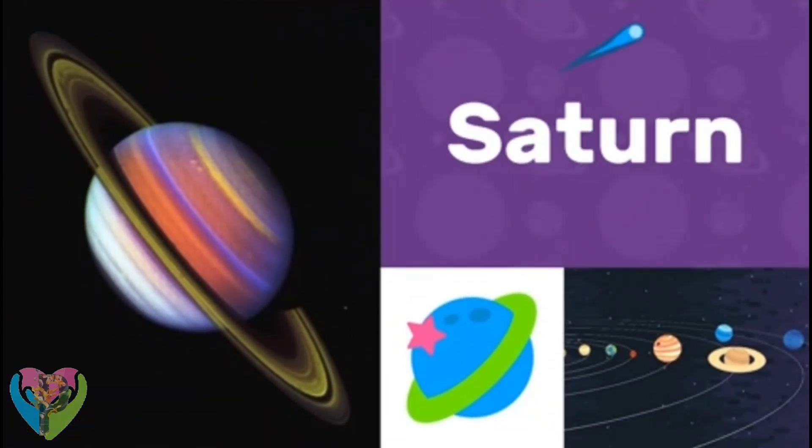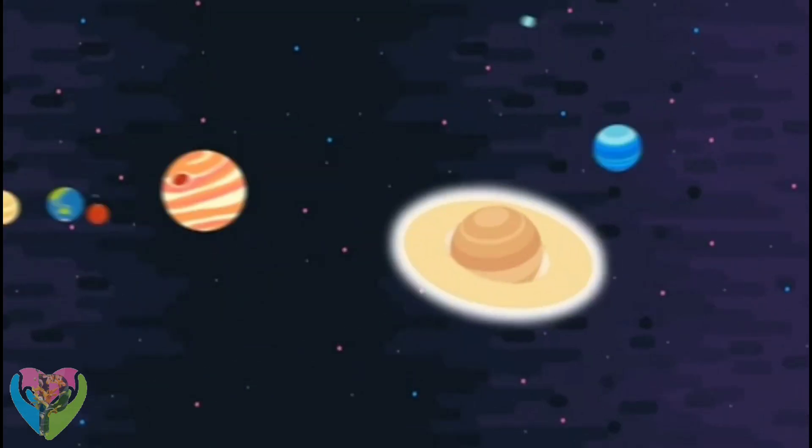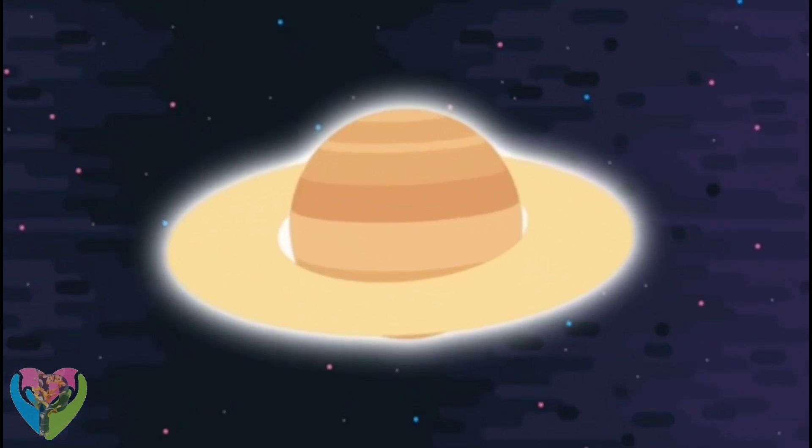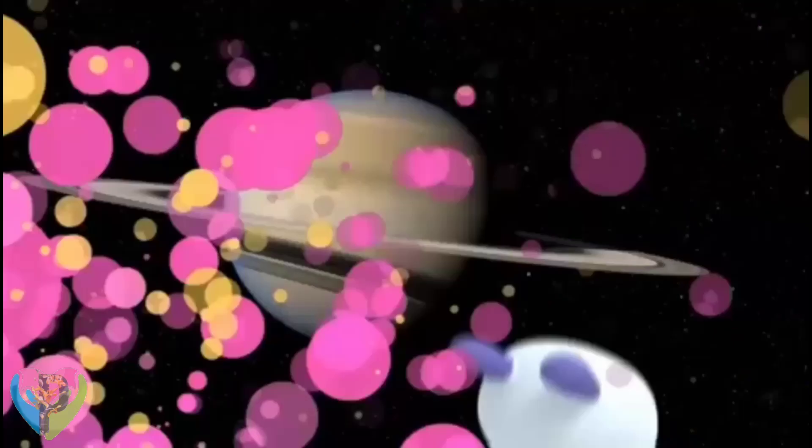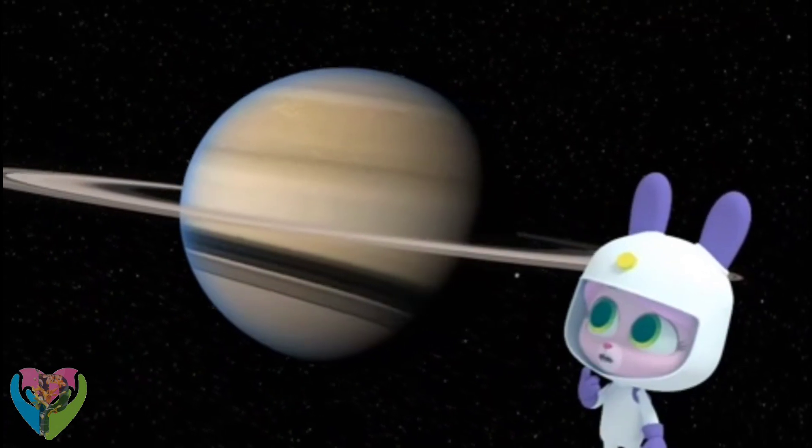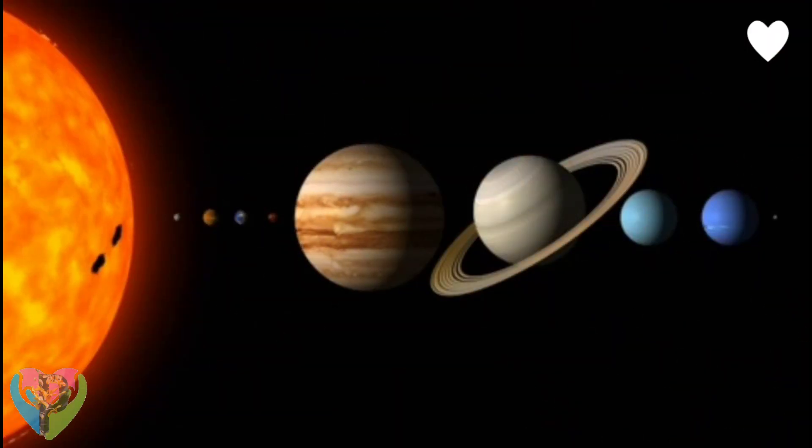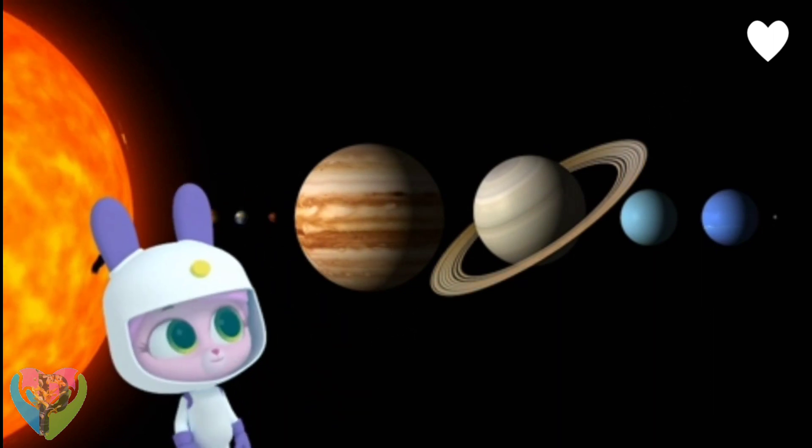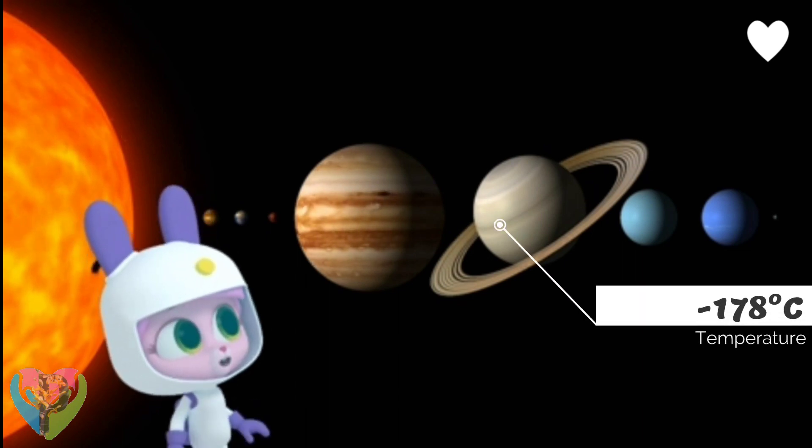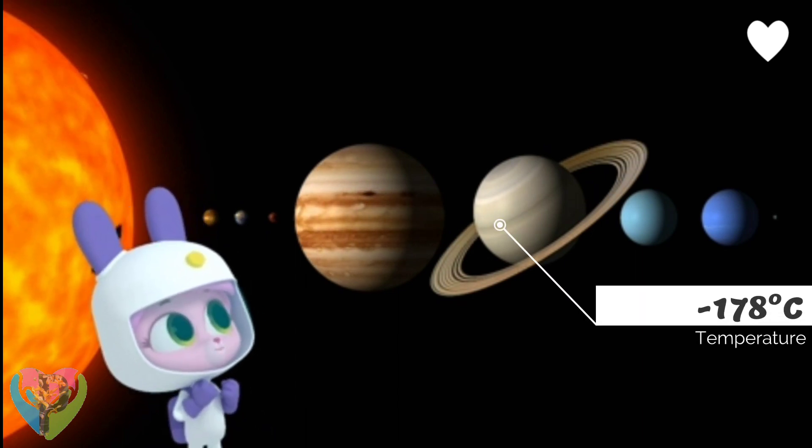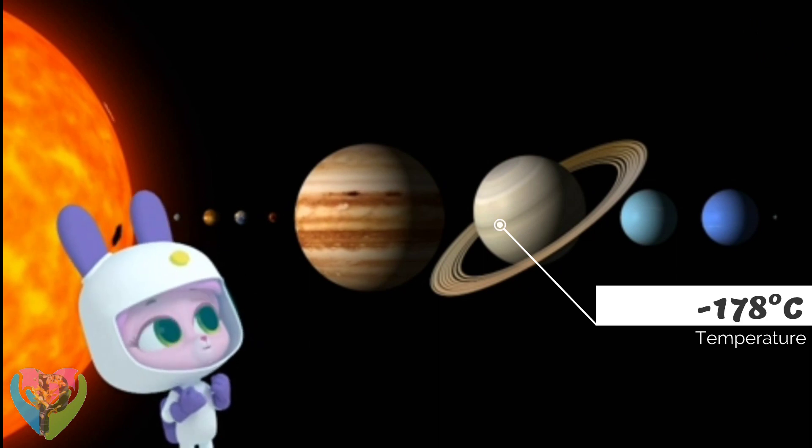Saturn. Saturn is the sixth planet from the Sun. It looks like that planet has a hula hoop around it. What makes Saturn special is that it's a gas planet with rings around it. We can see them from Earth with a telescope. Wow! They're so bright! And so big!